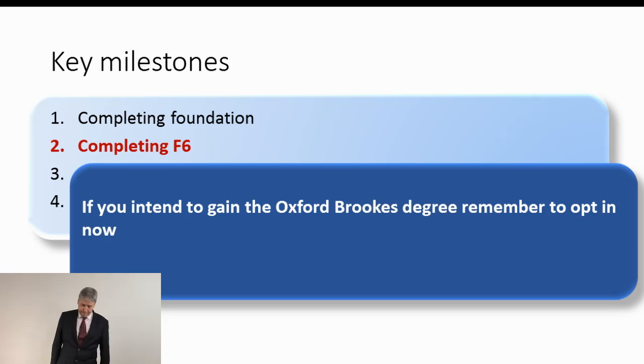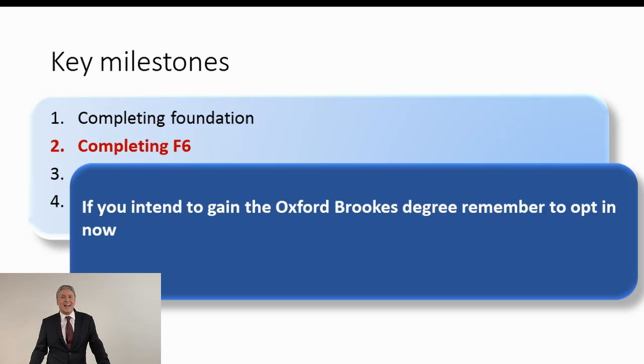Secondly, completing F6. F6. How can that be a key milestone? Well, okay. Once you've completed F6, that is now the point at which you must decide whether to opt in for the Oxford Brookes degree. Or, should I put it more carefully, I think the ACCA have got upset with the amount of people complaining about this, so you have the option to opt out at that point in time.